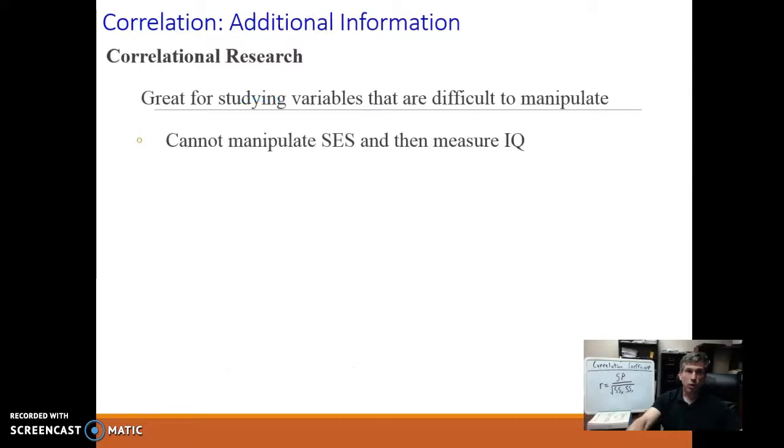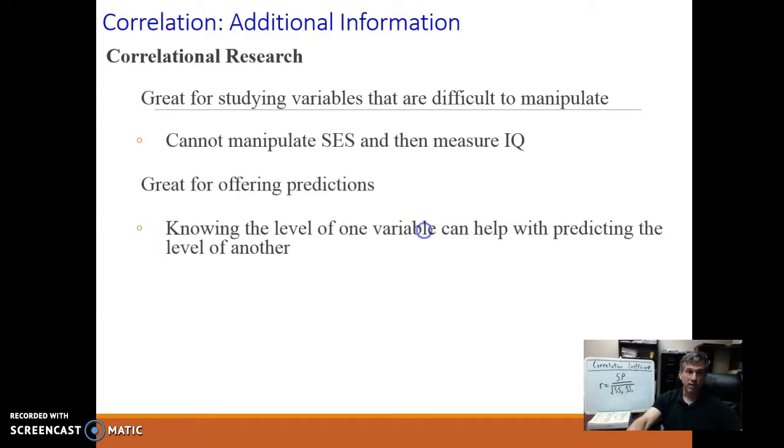So, when do we tend to use correlations overall outside of the methodology stuff? Well, a lot of times we do it when there are variables that are hard to manipulate, or impossible, or unethical to manipulate. If I want to measure people's socioeconomic status and their IQ, I can't manipulate how smart people are. I can't manipulate what kind of economic background they grew up in. All I can do is measure them and see how they're related. So, again, when we can't manipulate one or both of those factors for whatever reason, you're not going to be able to get cause and effect. Correlations are the best that you get.